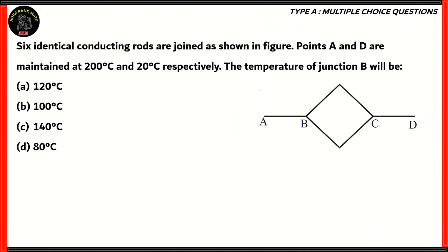So therefore, the answer to this question, that's the temperature of junction B, is option C, 140°C. The other options are incorrect because according to the problem that we've solved, 140°C is the temperature of junction B. So we used aspects of electricity in order to solve a thermal problem. This can be used in cases where there are identical objects. When they're not identical, then this approach doesn't work correctly.